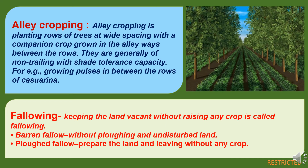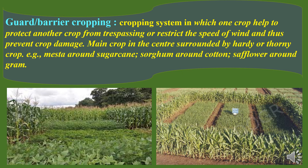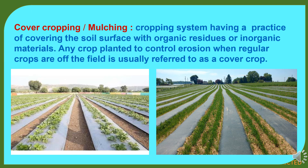Fallowing means keeping the land vacant without raising any crop. These are of two types: first, fallow without plowing — undisturbed land; and second, plowed fallow — prepare the land and leave it without any crop. Guard or barrier cropping is a cropping system in which one crop helps to protect another crop from trespassing or restricts the speed of wind and thus prevents crop damage, with the main crop in the center surrounded by hardy or thorny crops. Examples: growing napier grass around sugarcane, sorghum around cotton, and safflower around gram. Cover cropping or mulching is a cropping system having the practice of covering the soil surface with organic residue or inorganic materials. Any crop planted to control erosion when regular crops are off the field is usually referred to as a cover crop.